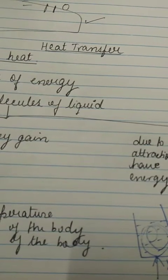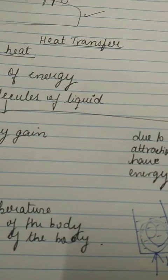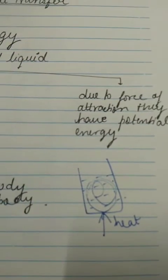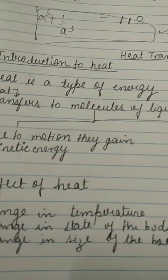The total kinetic energy of the molecules of a substance is called its internal kinetic energy, and the total potential energy of the molecules is called its internal potential energy. The sum total of both internal potential energy and kinetic energy is called the average kinetic energy. Heat is energy and the SI unit of heat energy is the joule.